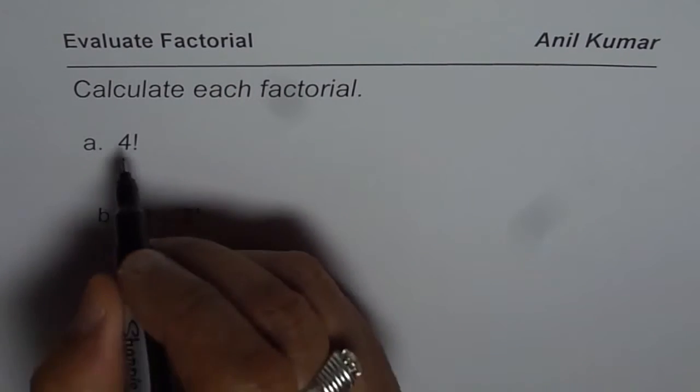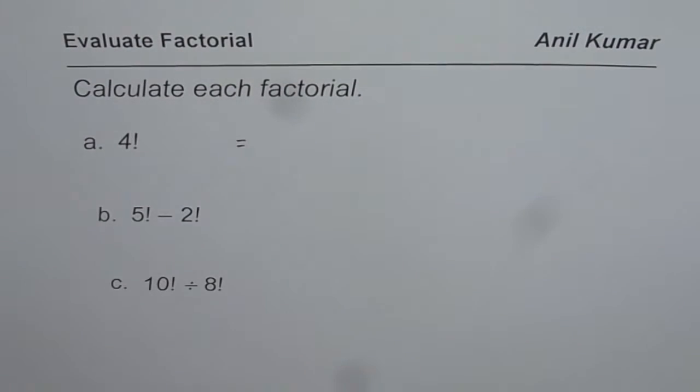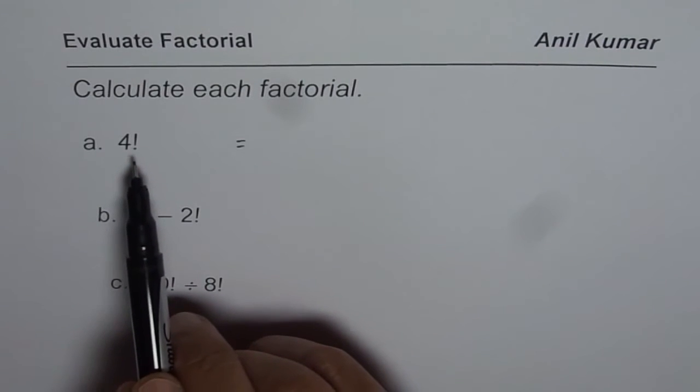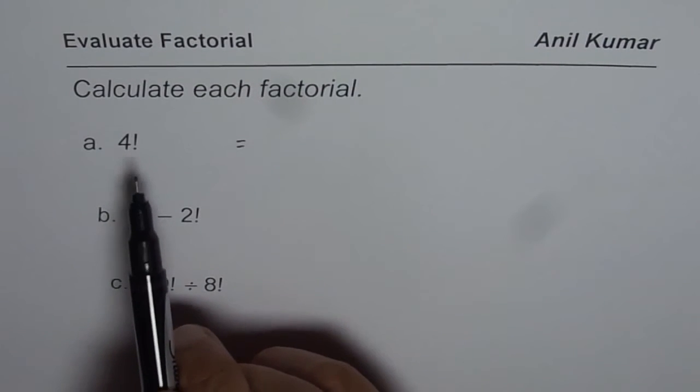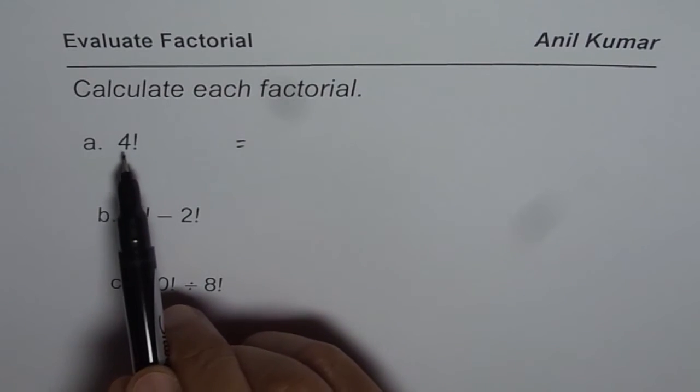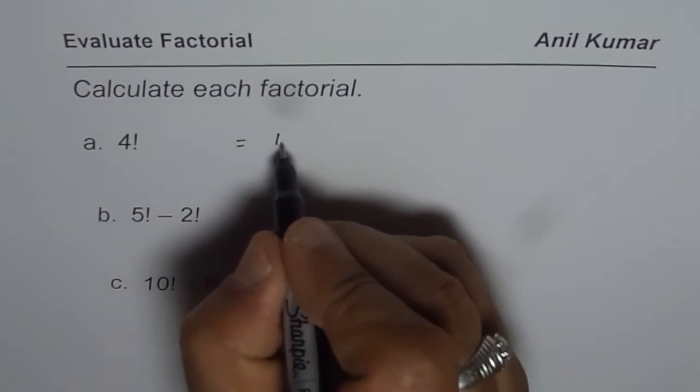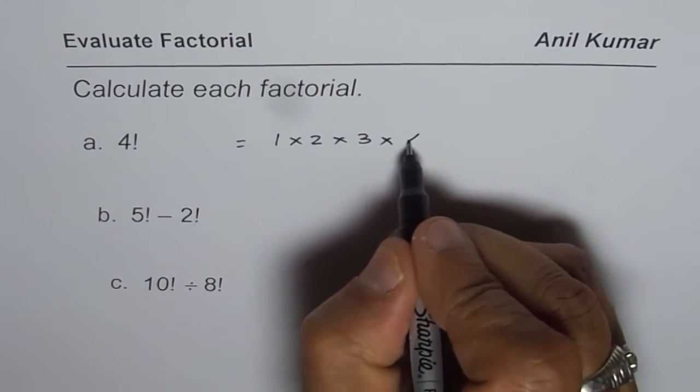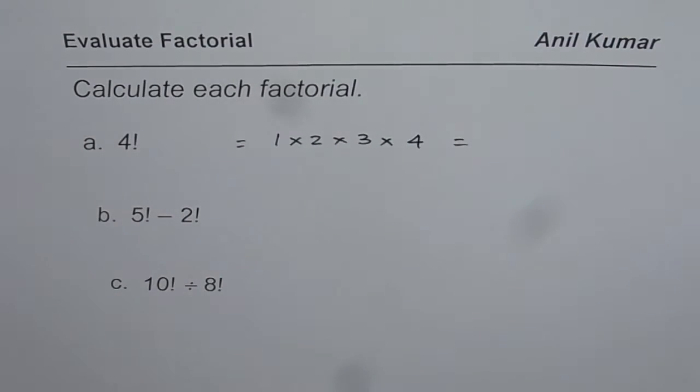So let us understand what is 4 factorial. As you know, factorial notation means multiply consecutive positive integers from 1 to the number. So 4 factorial really means 1 times 2 times 3 times 4.